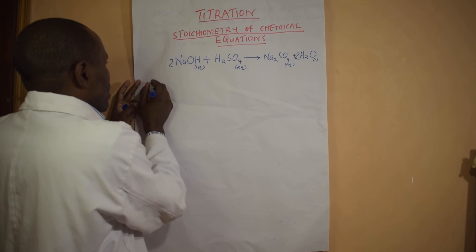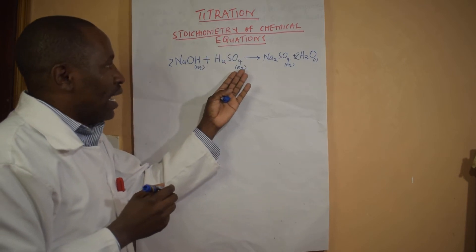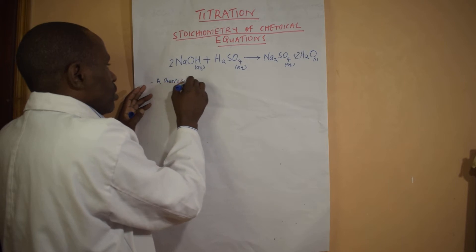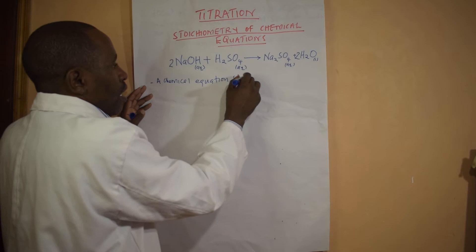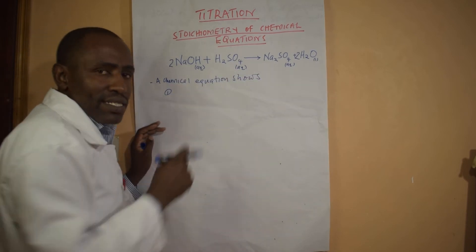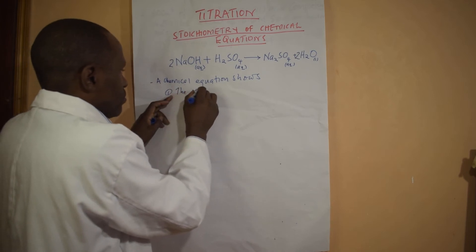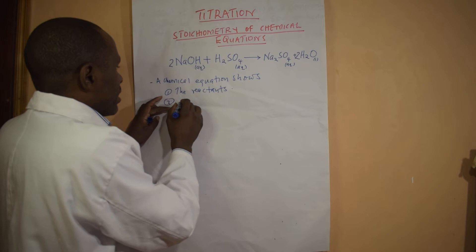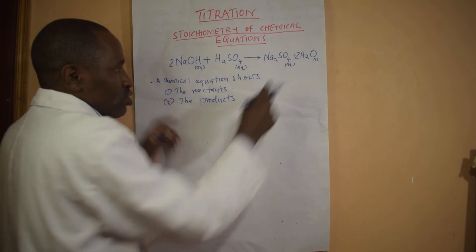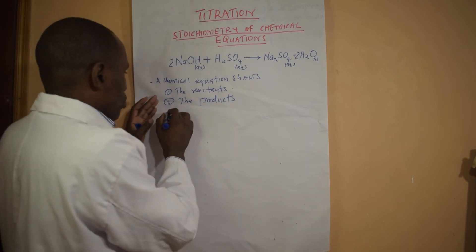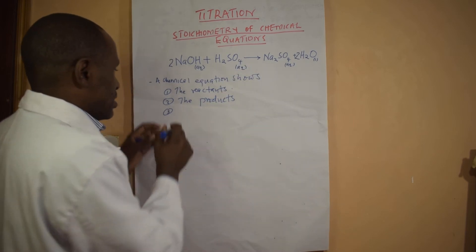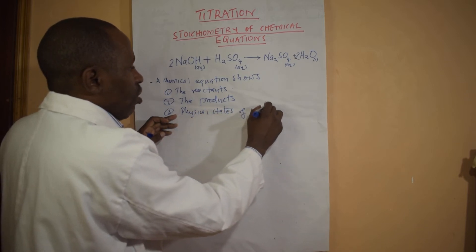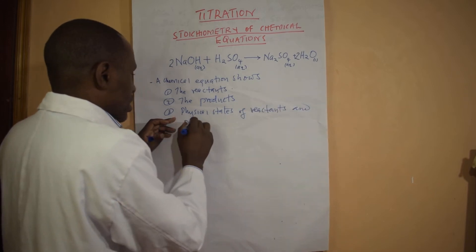A balanced chemical equation shows several things. Number one, it shows the reactants. It shows the products — what is on our right. Number three, it also shows the physical states of reactants and products. That's another thing that an equation will show.